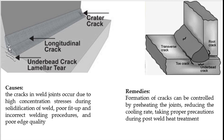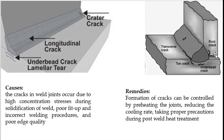In a T joint, a longitudinal crack runs along the weld axis. Crater cracks are another type. Under-bead crack or lamellar tear occurs beneath the bead in a T joint. The toe of the weld is the edge where bead meets base plate; a crack there is called a toe crack. A crack at the root of the weld — the deepest penetration point in a T or I joint — is called a root crack.